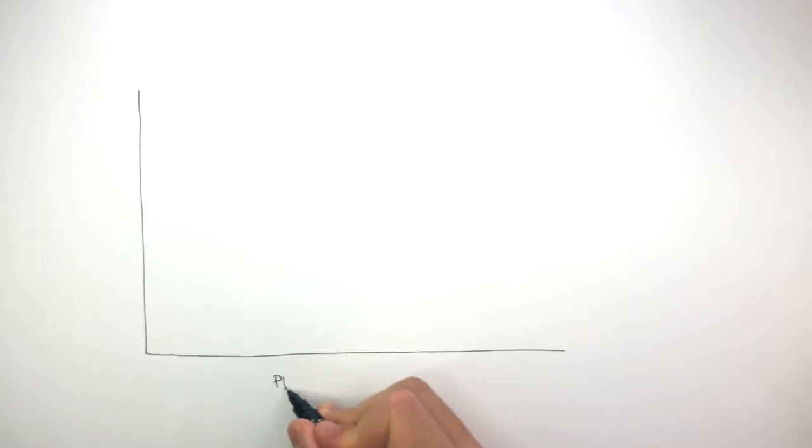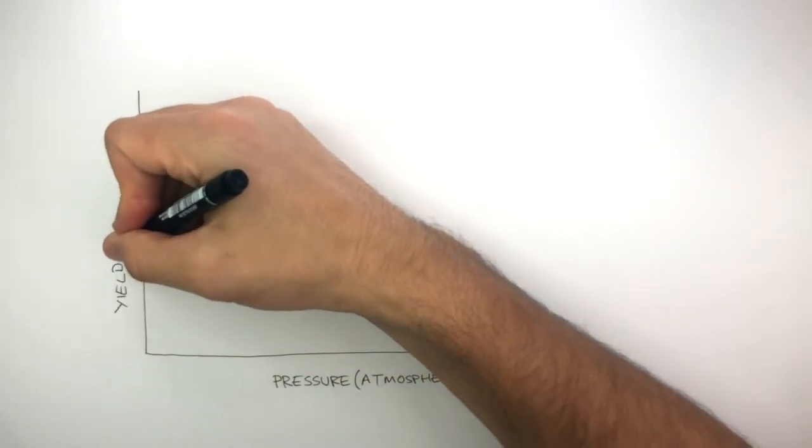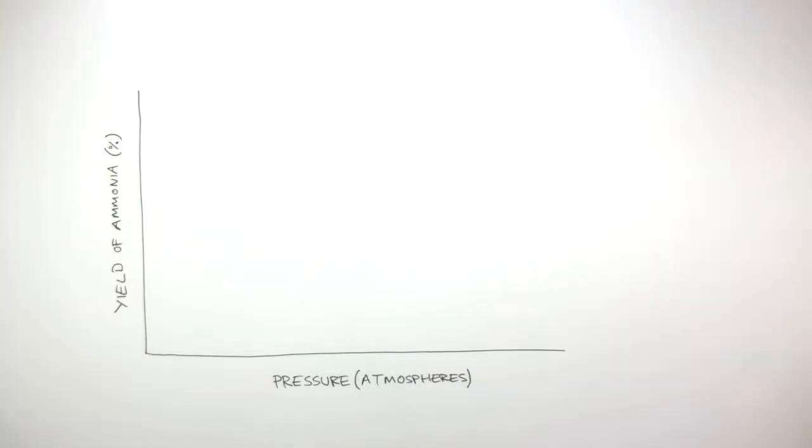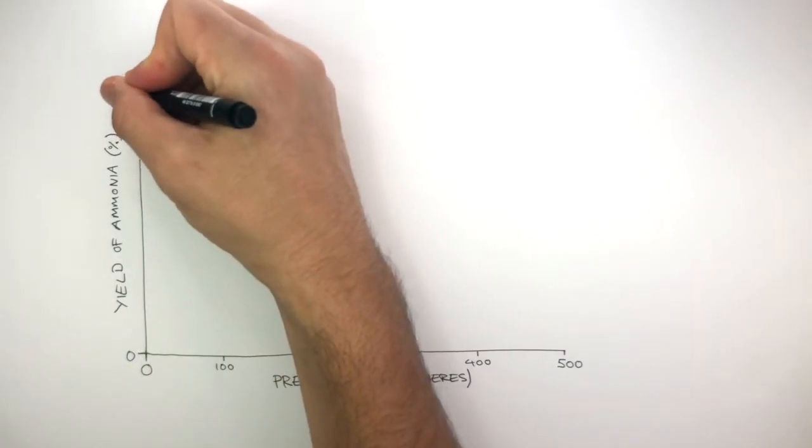Here I'm drawing a graph. On the x-axis there is the pressure in atmospheres and on the y-axis there is the yield of ammonia, the percentage of ammonia produced. The x-axis goes from zero to 500 atmospheres and the y-axis shows yield from zero to 100 percent.